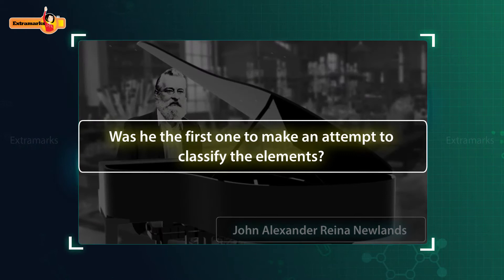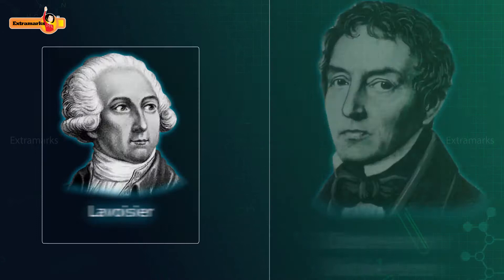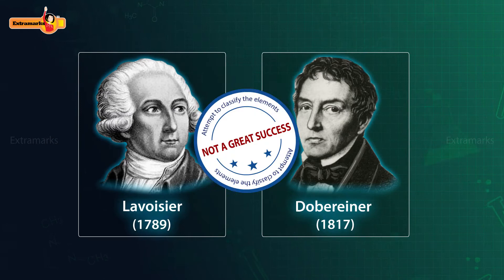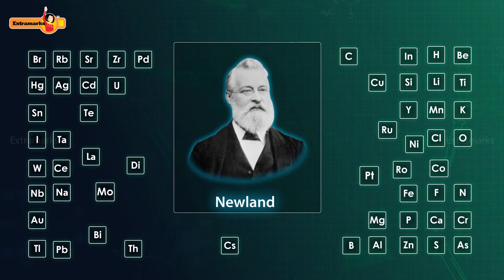Was he the first one to make an attempt to classify the elements? The answer is no. Before him, Lavoisier and Döbereiner also made attempts in this field, but that was not a great success, as they were not able to arrange all the known elements of that time in a proper and systematic manner. Newland came up with a new idea to classify the 56 elements which were known at that time.